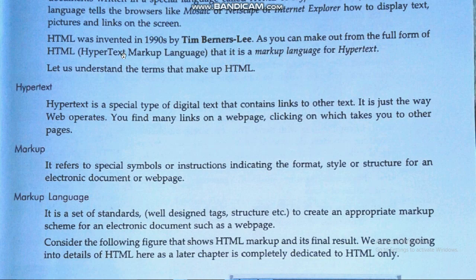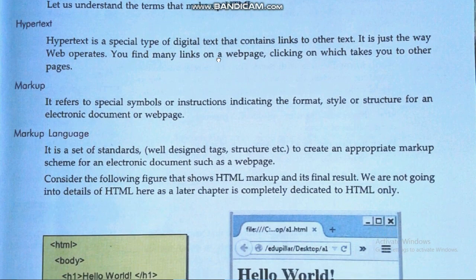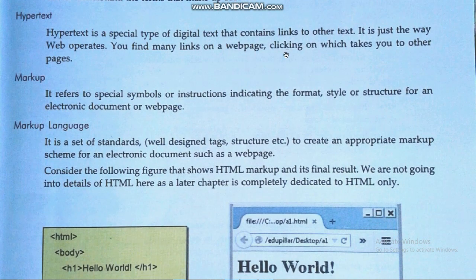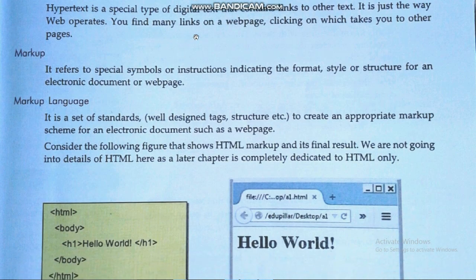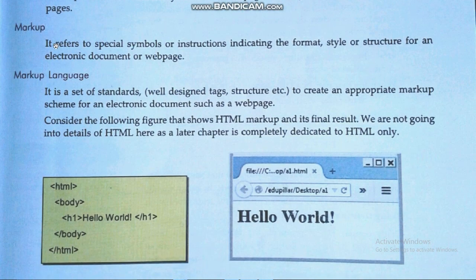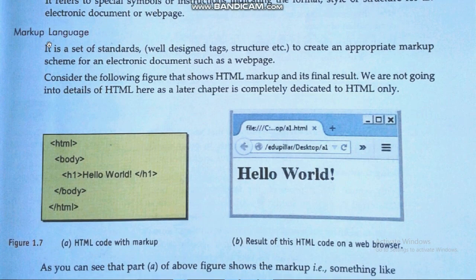HTML stands for HyperText Markup Language — the markup language for hypertext. Hypertext is a special type of digital text that contains links to other text; it is the way the web operates — you find many links on web pages, clicking on which takes you to other pages. Markup refers to special symbols or instructions indicating the format, style, or structure for an electronic document or web page. Markup language is a set of standards using well-designed tags and structure to create an appropriate markup scheme for an electronic document such as a web page.